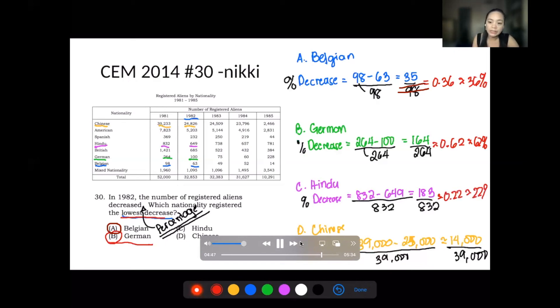That's 22%. And for Chinese, that is around 35%. So the answer here, when it comes to lowest percentage decrease, the answer here is letter C, and that is Hindu.